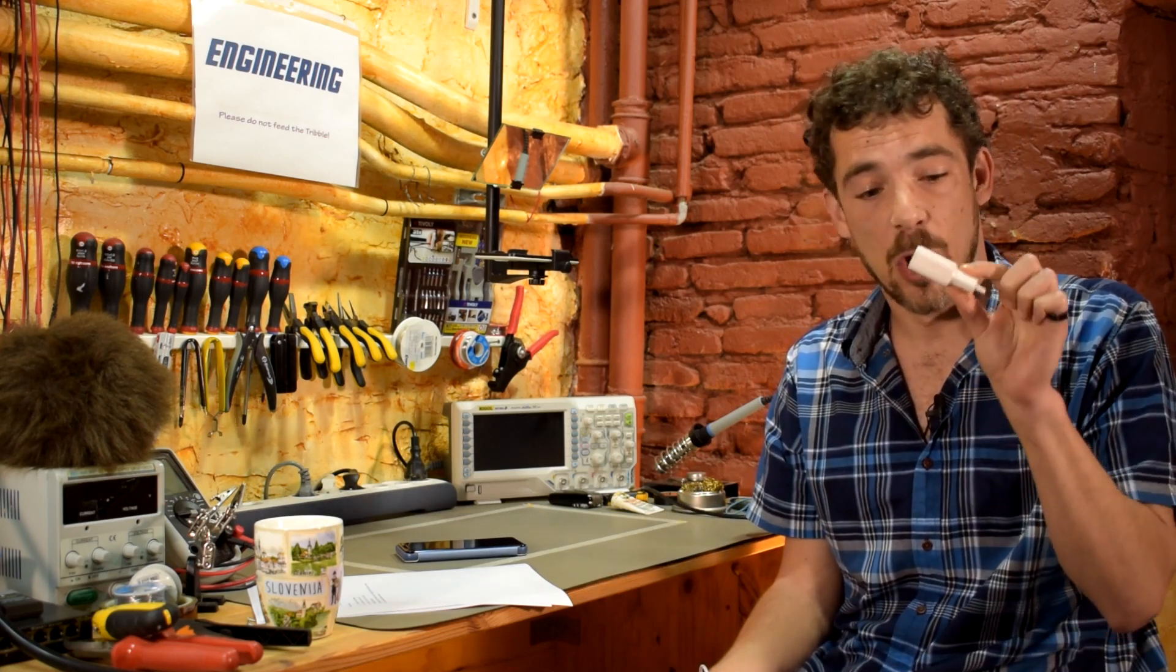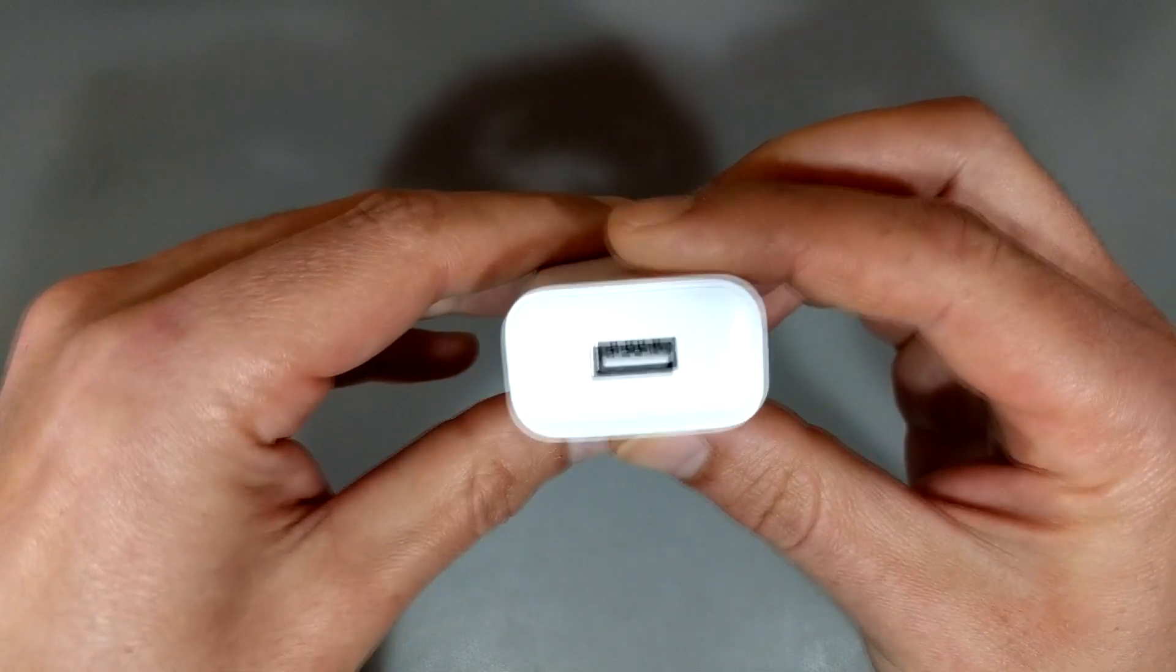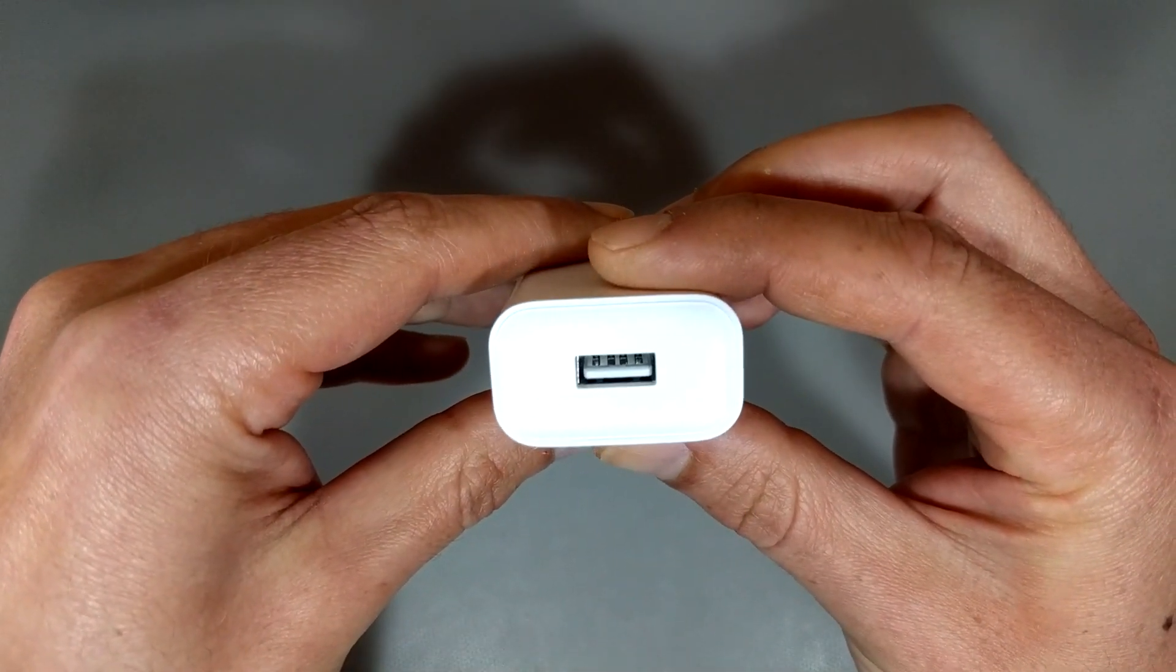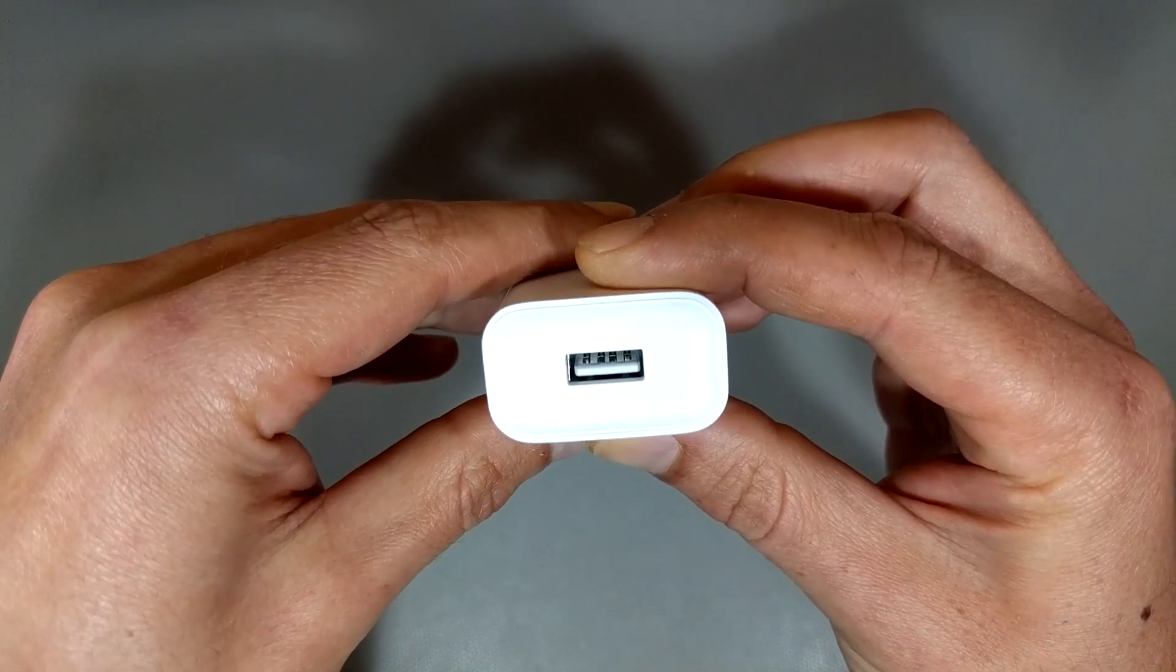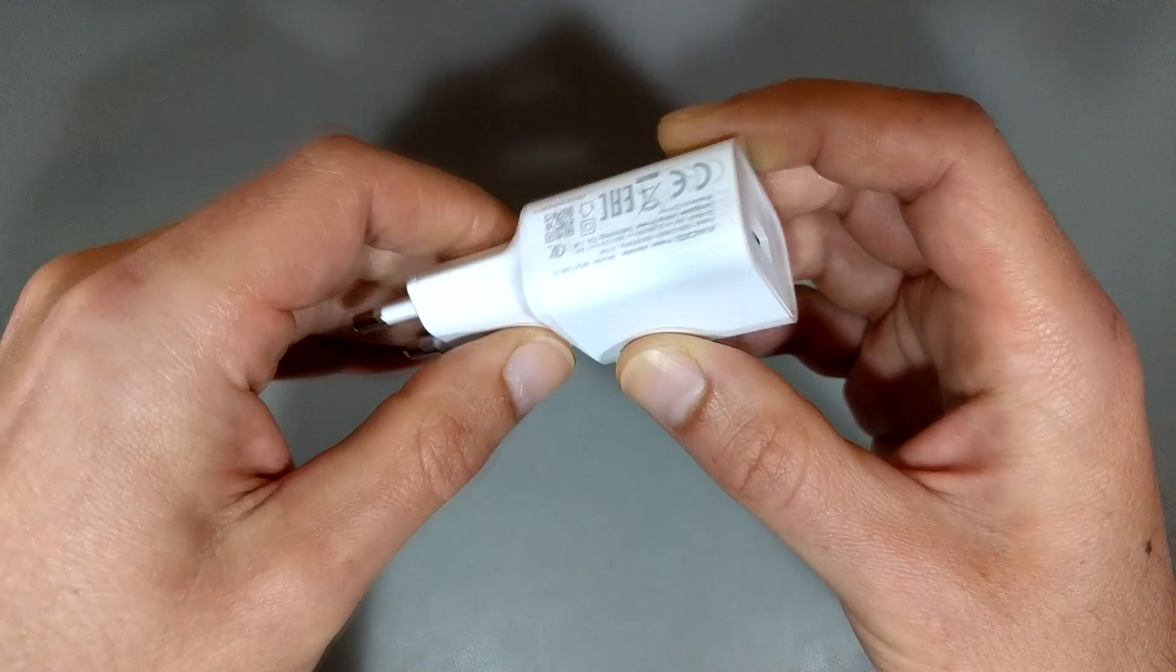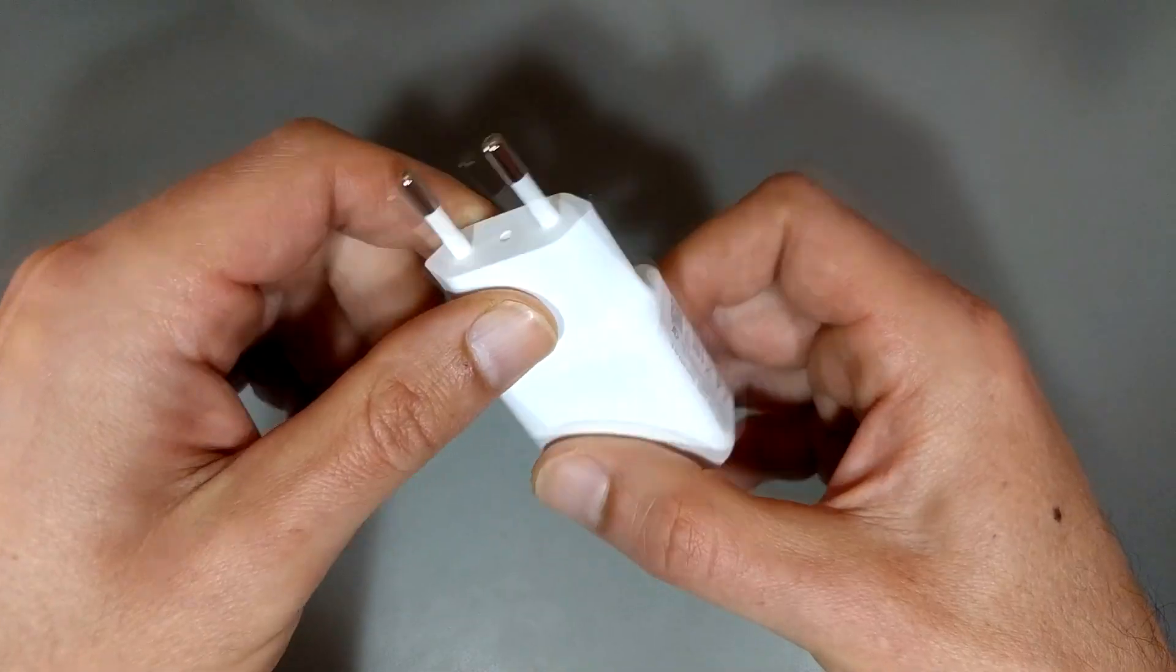Well, in order to answer this question, let us take a closer look at my quick charger. So here you can see the quick charger. And if you look in there, it's just a normal USB 2.0 socket. It's got four pins. And the other end, this is a European plug.